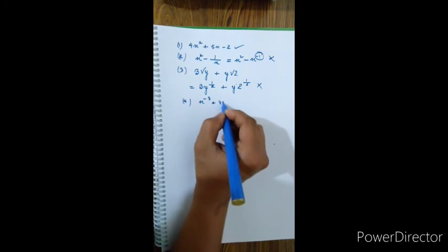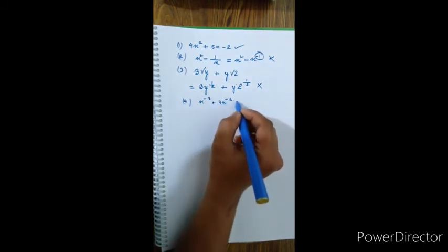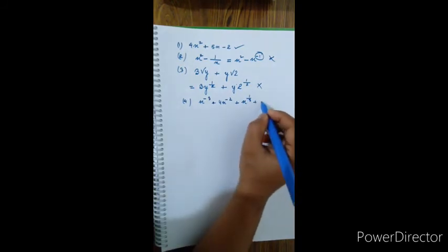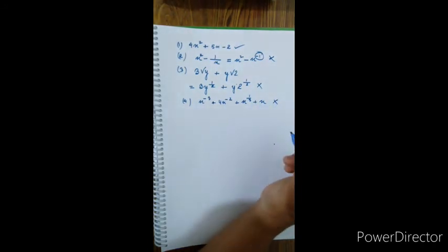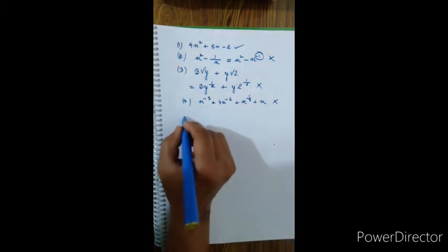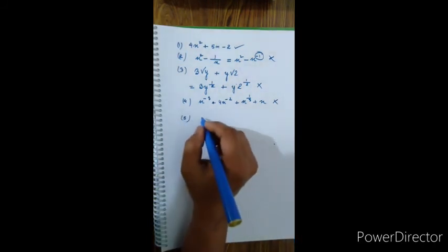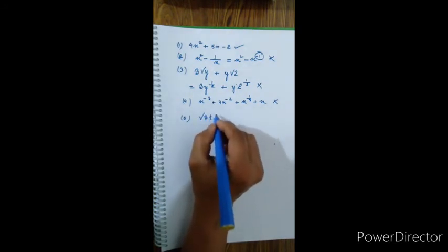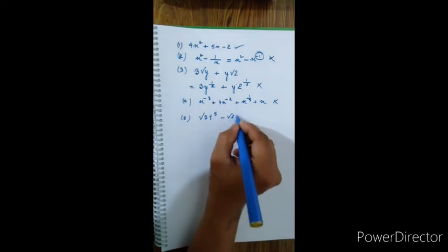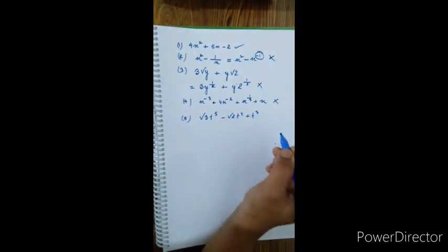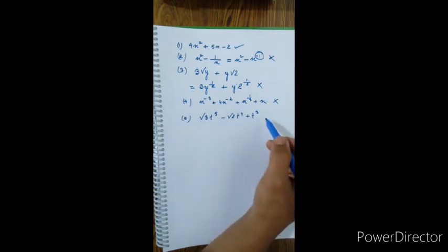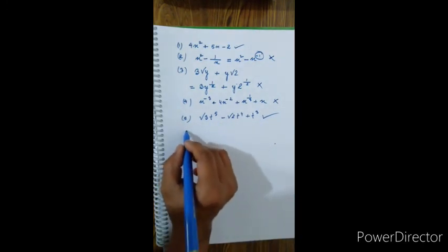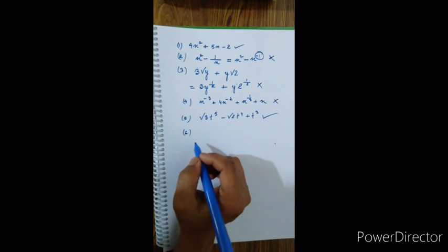Number 4: x to the power minus 3 plus 4x to the power minus 2 plus x to the power minus 3 plus 6. The powers are negative integers, so this is not a polynomial. Number 5: root 3 times t to the power 5, minus root 2 times t to the power 4 plus t cubed. The variable is t and all powers are positive integers, so this is a polynomial.